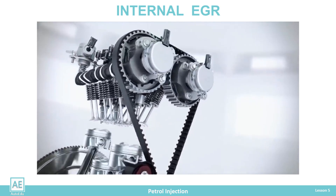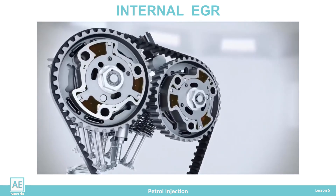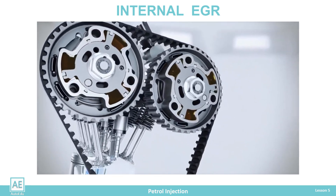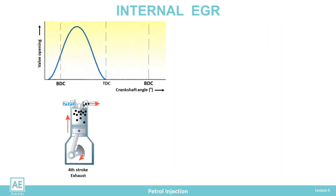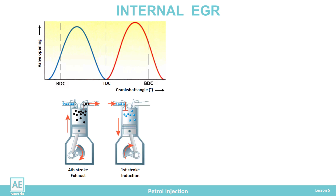Internal EGR is less well known and is used in vehicles with a variable cam adjustment system. These systems have variable valve opening times. During regular operation in the exhaust stroke, the intake valve is closed and the exhaust valve is open. The piston moves toward top dead center, forcing inert gas from the cylinder into the exhaust pipe. At the end of the fourth stroke, the exhaust valve closes and the intake valve opens, beginning the suction of fresh mixture into the cylinder.